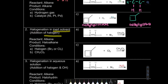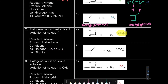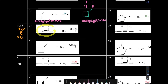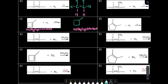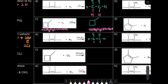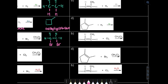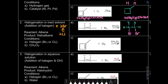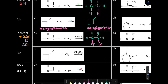Next is halogenation in inert solvent - addition of halogen. The halogen is Br₂ or Cl₂ but this time in inert solvent. So on the arrow we put bromine or chlorine reacting with our alkene. What we add is 2 bromine atoms or 2 chlorine atoms. The double bond becomes 2 single bonds and we add 2 of our bromine atoms. For example C, we add 2 of our chlorine atoms.